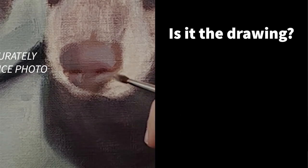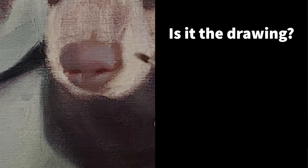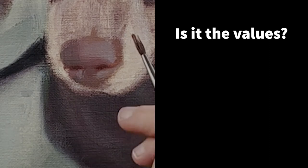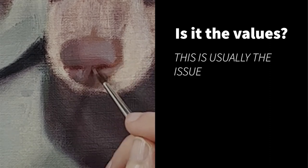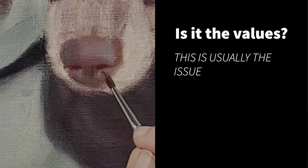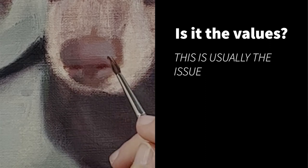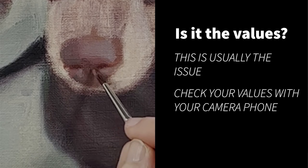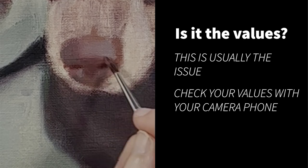So if my drawing is okay, I then move on to my values and I ask myself, are my values out? I have to say that in about 85% of cases, it is usually my values that are out. And in last week's video, I gave you a tip on how to check your values using your camera phone.